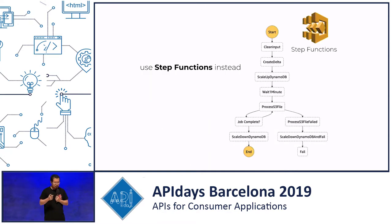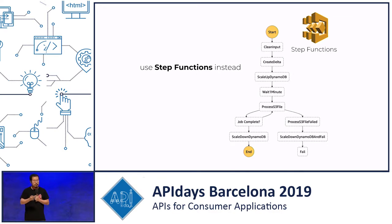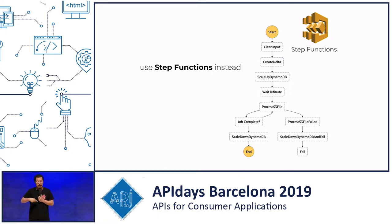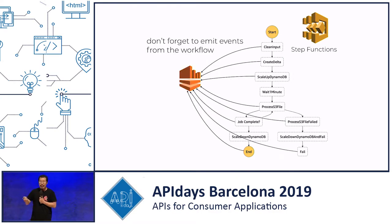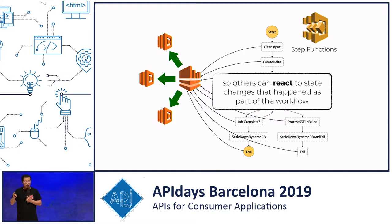So when it comes to implementing and orchestrating workflows — especially within the same bounded context — I still prefer to use a workflow engine such as Amazon Step Functions. But any time I make state changes within my workflow, like adding a new credit card number to a user profile, I will still publish them as events back to the stream so that other systems can react to them independently.